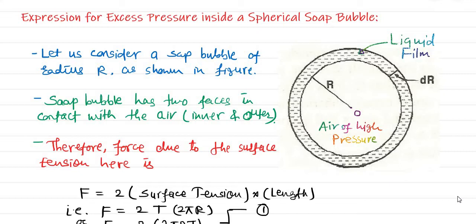In the last video, we talked about a similar concept but for a spherical drop. There I told you the difference: the spherical drop is a solid thing, so there will be only one surface in contact with the air. But in the spherical soap bubble, we have two surfaces which are in contact with air.